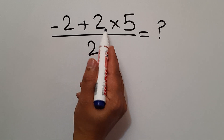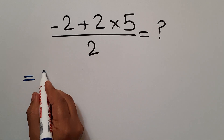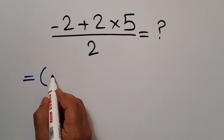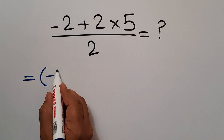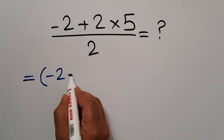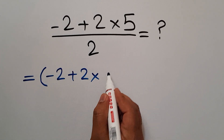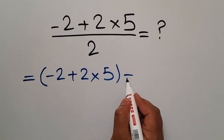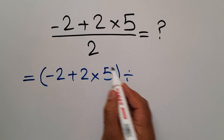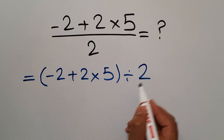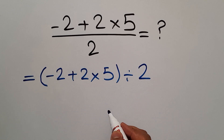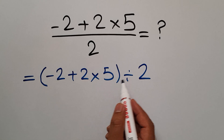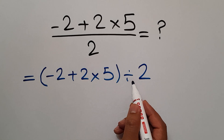Instead of this fraction, we can write parentheses — the numerator, negative 2 plus 2 times 5, divided by denominator 2. Now we have one set of parentheses and one division.